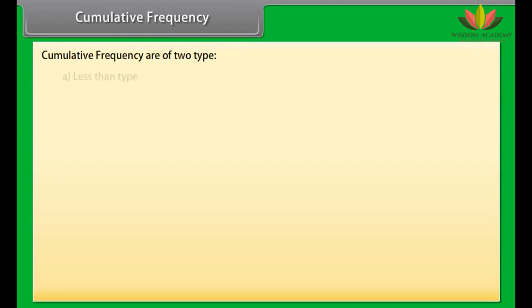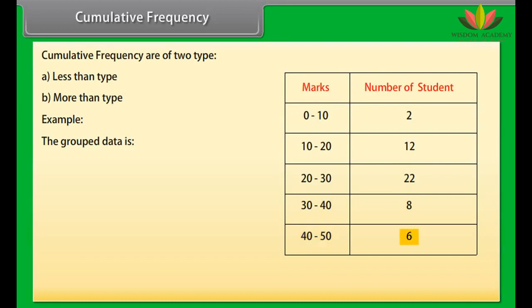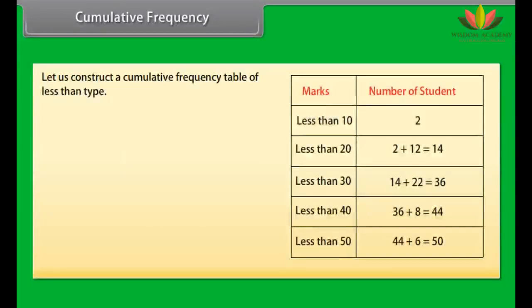Cumulative frequency is of two types: less than type and more than type. Let us understand with an example. The grouped data is: marks 0–10 with 2 students, marks 10–20 with 12 students, marks 20–30 with 22 students, marks 30–40 with 8 students, and marks 40–50 with 6 students.